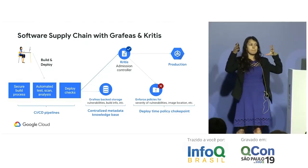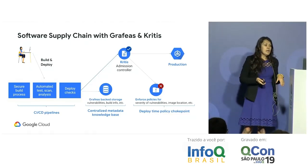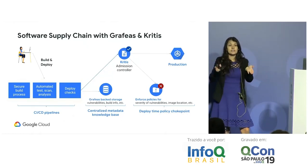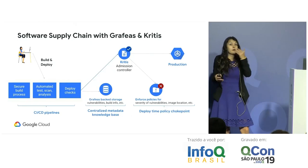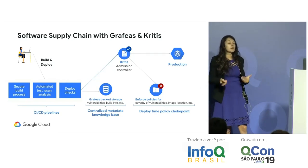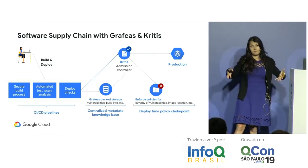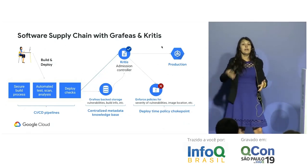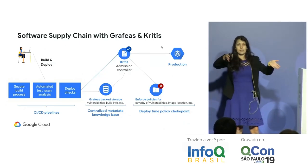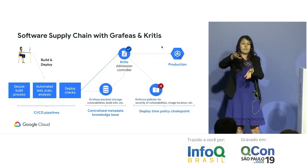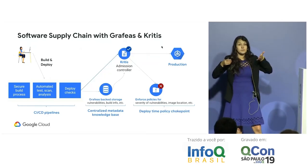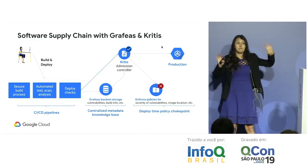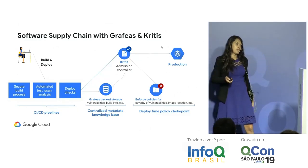Kritis does deploy-time checks and policy enforcement. It doesn't store vulnerability information itself — it does the policy checking and talks to the Grafeas metadata API to find out: given this container, what vulnerabilities are there, what severity, where did it come from, do we trust it? That's how Grafeas and Kritis fit into the overall software supply chain.